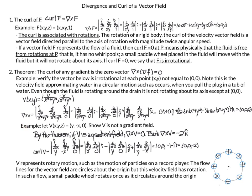This next example illustrates the theorem that says the curl of any gradient is the zero vector. We have let v of x, y, z equal (y, -x, 0). The problem asks us to show that v is not a gradient field. According to this theorem, if v equals the gradient of some function f, then when we take the curl it will equal 0.